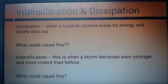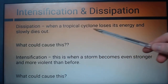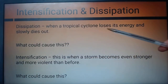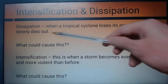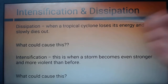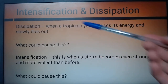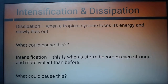Two new keywords: intensification and dissipation. Write down dissipation — when a tropical cyclone loses energy and slowly dies out. While you're writing it down, think about what are the things that could cause a tropical cyclone to dissipate.